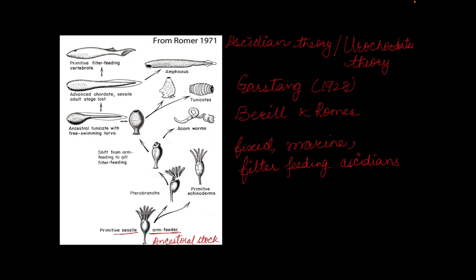Arm feeder means they had tentacle-like arms, just like tentacles, as you can see in the diagram. By a ciliary method, they trapped food particles. From this ancestral stalk were derived primitive echinoderms and pterobranchs. In due course of time, there was a shift from arm feeding to gill filter feeding.